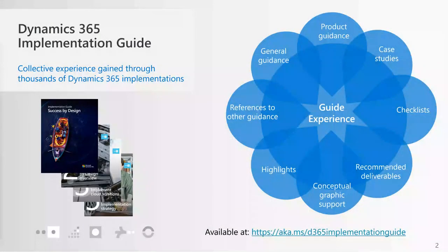This is the implementation guide, written by the Fast Track team. It has guidance on all areas from initiate, build, design, deploy, and all the way to the operate phase. It covers both Finance and Operations as well as Customer Engagement Dynamics 365 apps. Highly recommend this guide — please keep it handy. If you are looking for something, see if you can find it here; it is a great reference document.